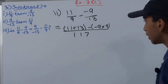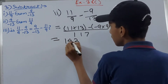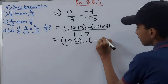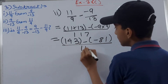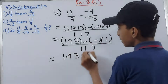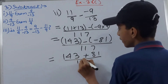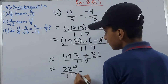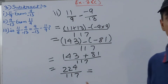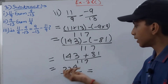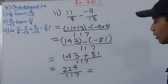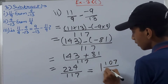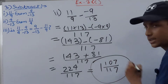We recall: 11 × 13 = 143 and 9 × 9 = 81. So we get 143 − (−81) = 143 + 81 = 224, all over 117. Converting to mixed form: 117 goes into 224 once with remainder 107. So the answer is 1 whole 107/117 — the same as part (i) but without the minus sign.